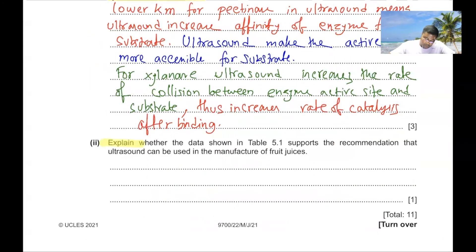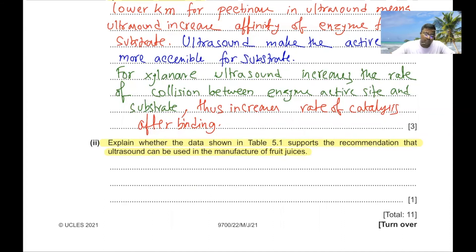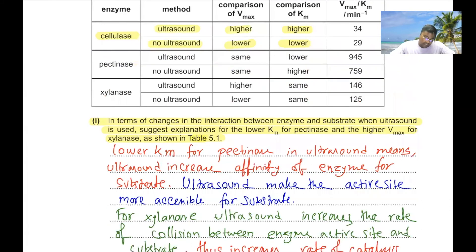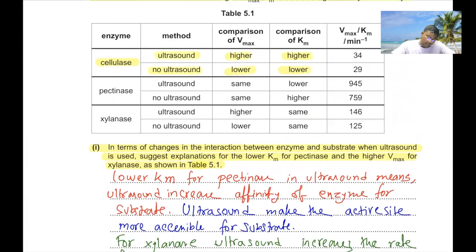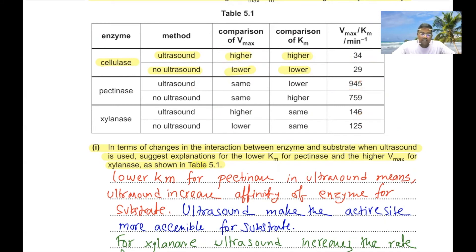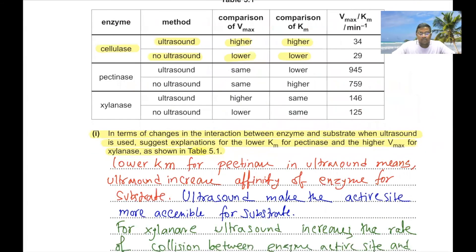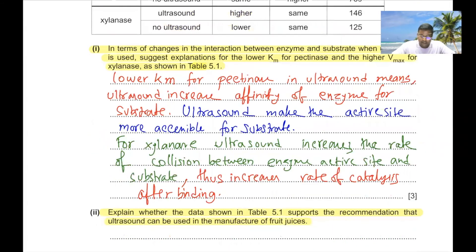In every case when ultrasound is used, we see a higher V-max/Km ratio, meaning catalytic efficiency is increased. Therefore the data in table 5.1 supports the recommendation that ultrasound can be used in the manufacture of fruit juices.